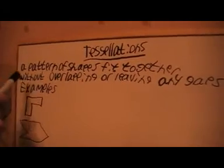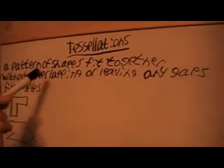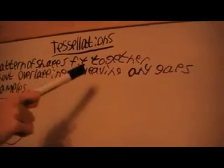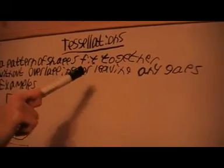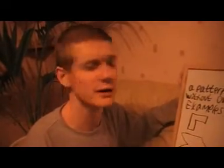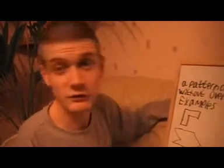Basically, a tessellation is a pattern of shapes that fit together without overlapping or leaving any gaps. If they leave any gaps or overlap, then it could mean you've done it wrong or that simply they just can't be done because some shapes won't tessellate.